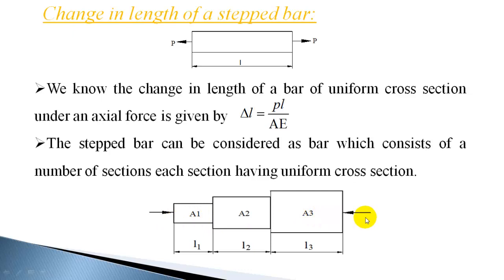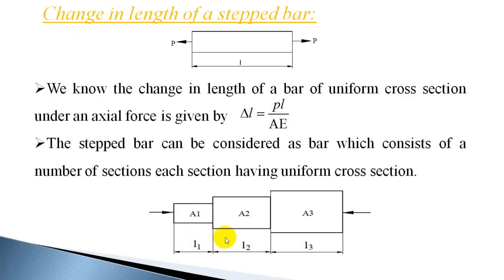Under this axial compressive load, each section is subjected to the same load because there are only end loads. Each section will be subjected to the same compressive load. So the load in each section is known, the length of each section is known, and the area of cross section is also known. If you know the Young's modulus property, you can find out the change in length of each section separately using the formula δL = PL/AE.